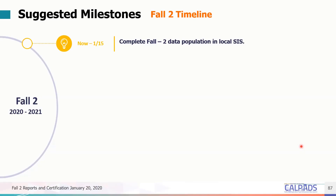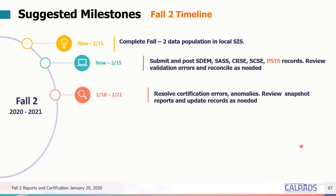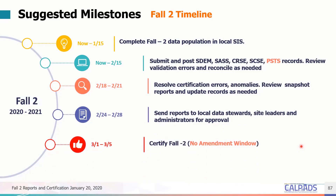Moving on to our milestones. I know you're still focused on Fall 1, but it's my obligation to give you a heads-up on what to expect for Fall 2. These are the timelines set for you to know if you're on track. The bottom line is you should be certified by March 5. Fall 2 does not have an amendment window, so you should be done by March 5, unless there's an extension.